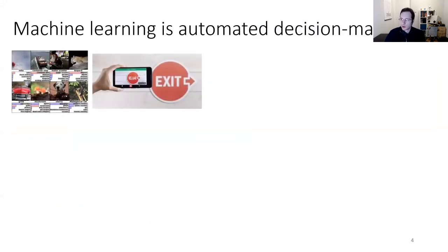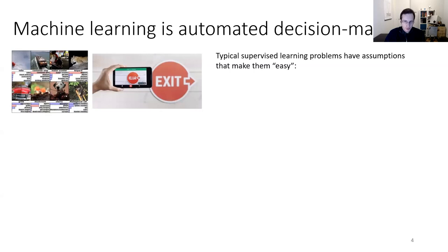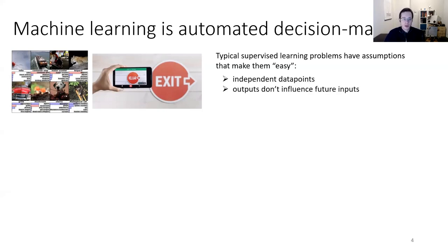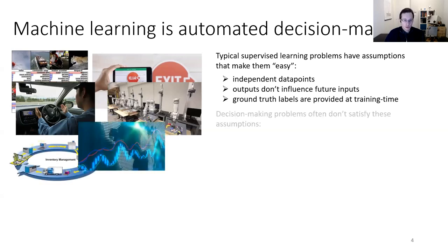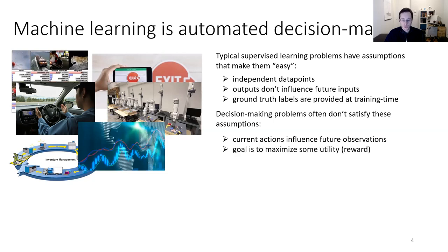Machine learning is really automated decision making, whether we frame it that way or not. Typical supervised learning problems make convenient assumptions: independent data points, outputs don't influence future inputs, and ground-truth labels are provided at training time. These are actually false in reality, but they make the ML problem more manageable. Decision-making problems don't satisfy these assumptions — current actions influence future observations, the goal is to maximize utility, and optimal actions are not necessarily provided.